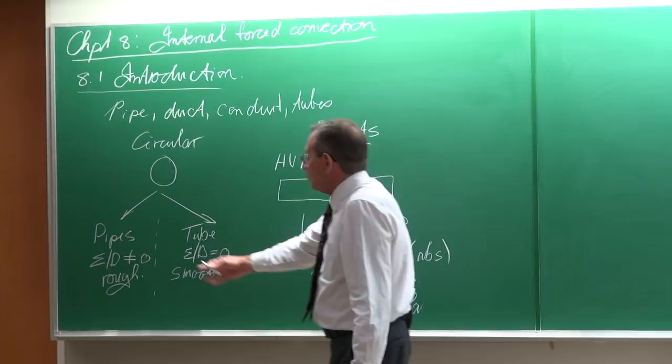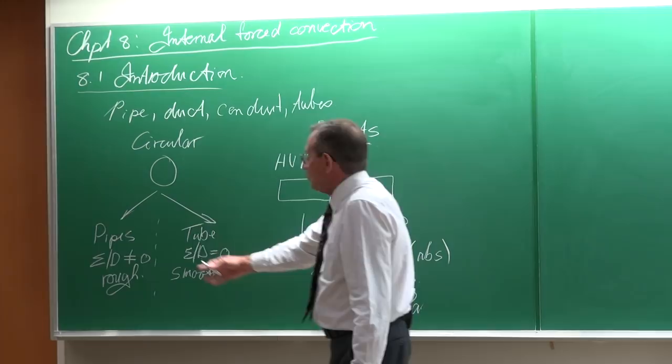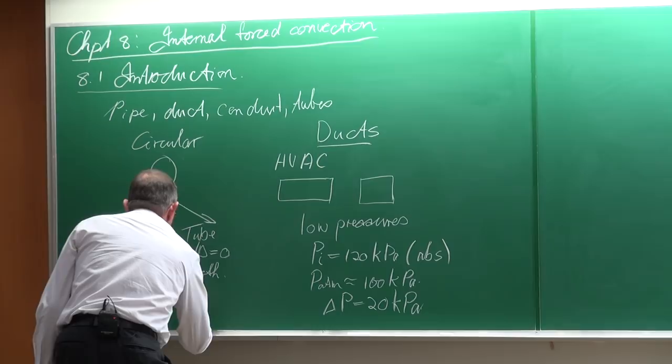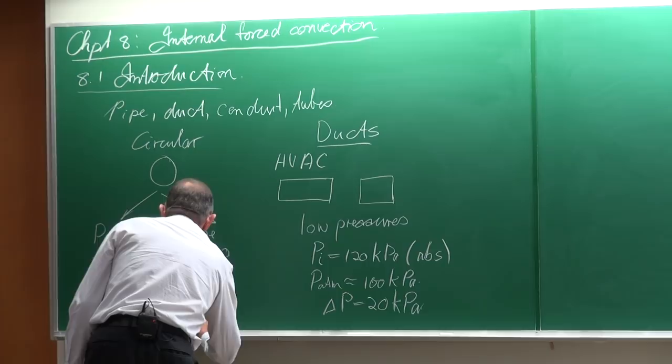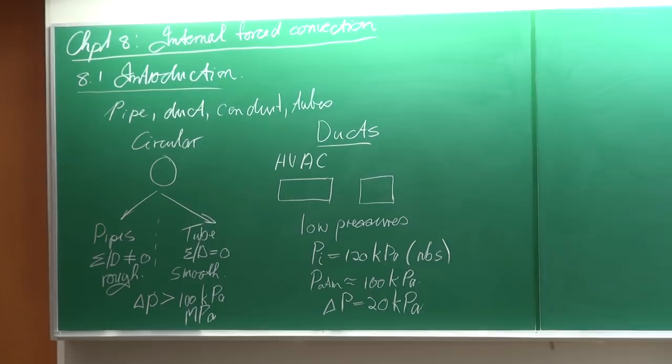With pipes, normally the delta P's are much more than hundreds of kPa, and in many cases we are talking of megapascals in terms of pressure. So a pipe or a tube can take a lot of pressure. Ducts, normally not.